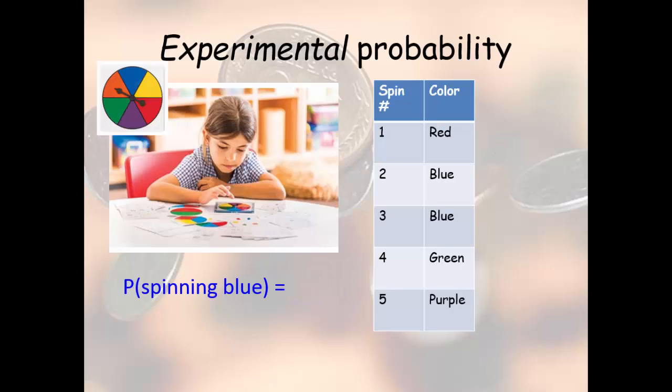In experimental probability, you've actually done a probability experiment and collected data. You use only the data to calculate probability. Here we have a table that shows a student has spun a spinner five times and recorded how the spinner landed every time. When we find the probability of spinning blue, it's how many blues are in the table. She spun blue two times out of the five times that she spun the spinner. That's the experimental probability.